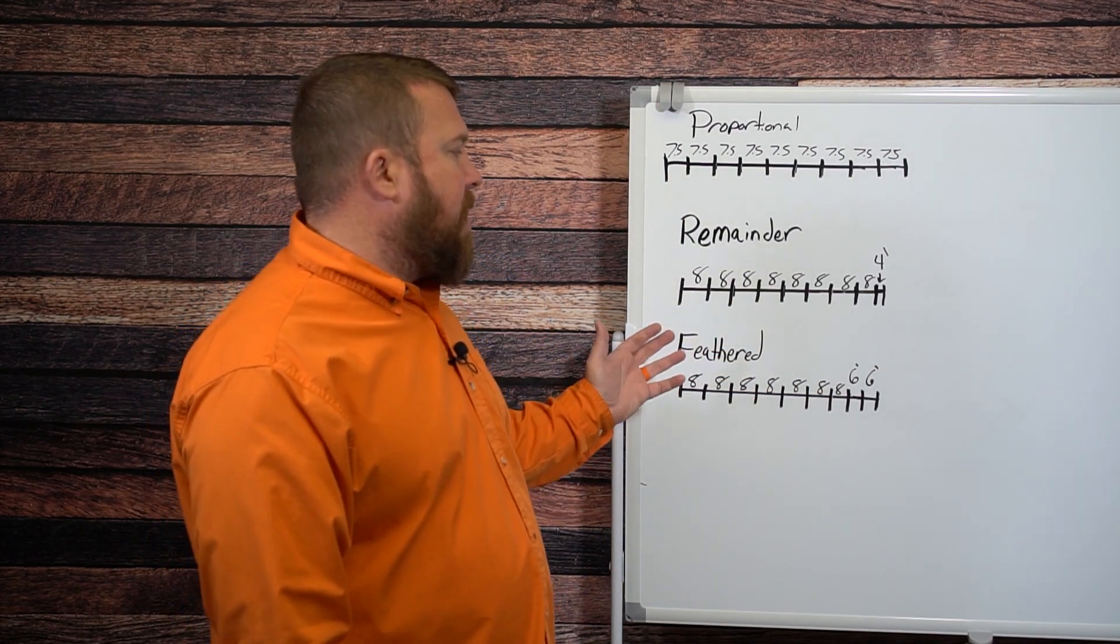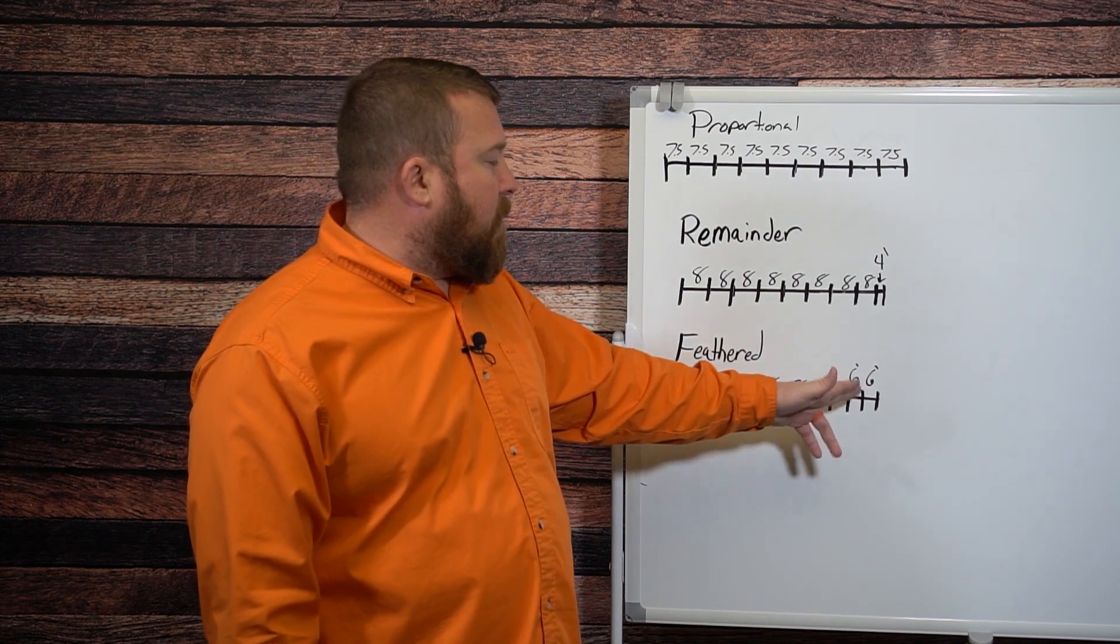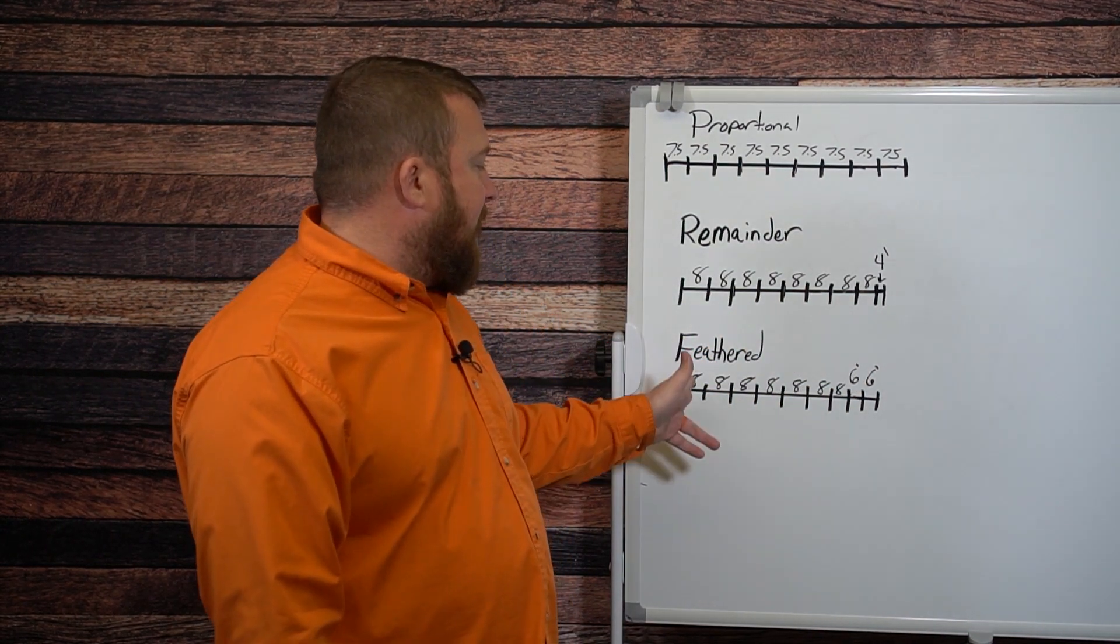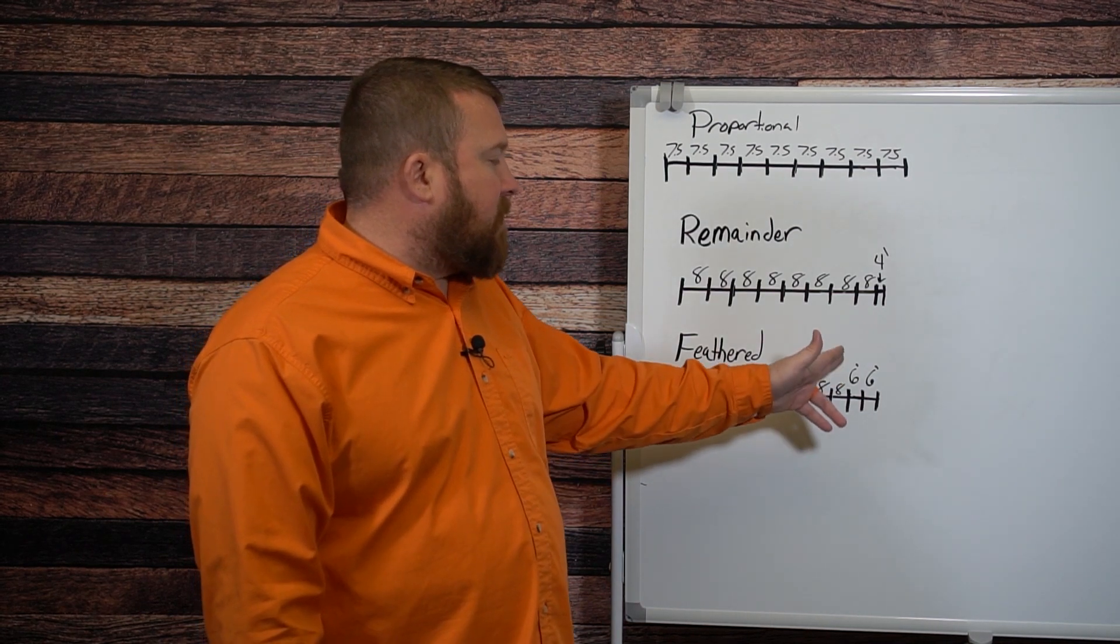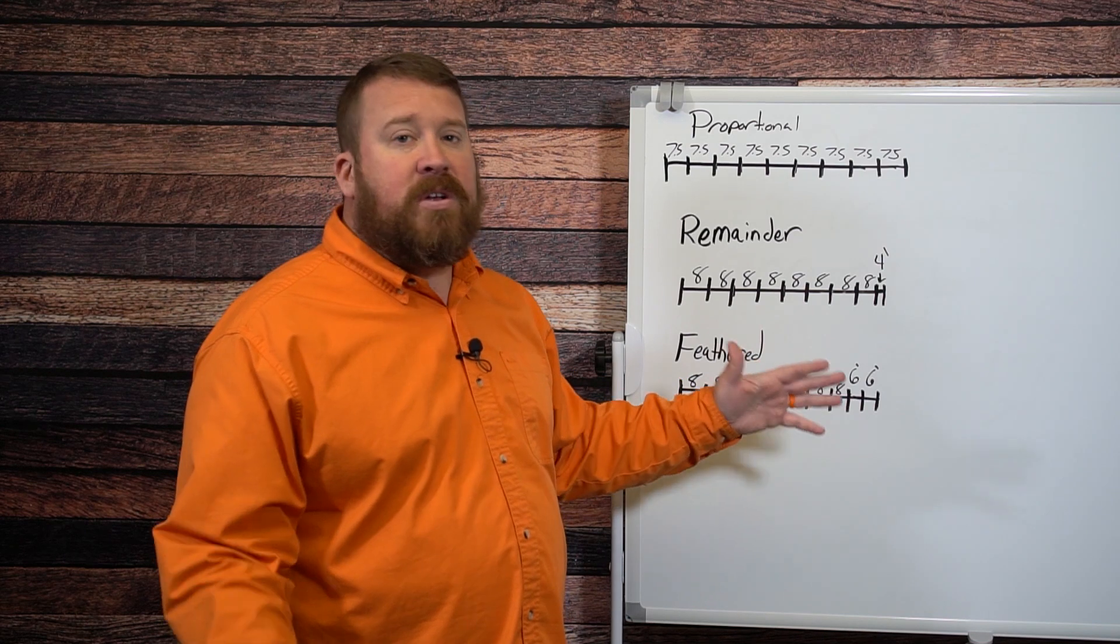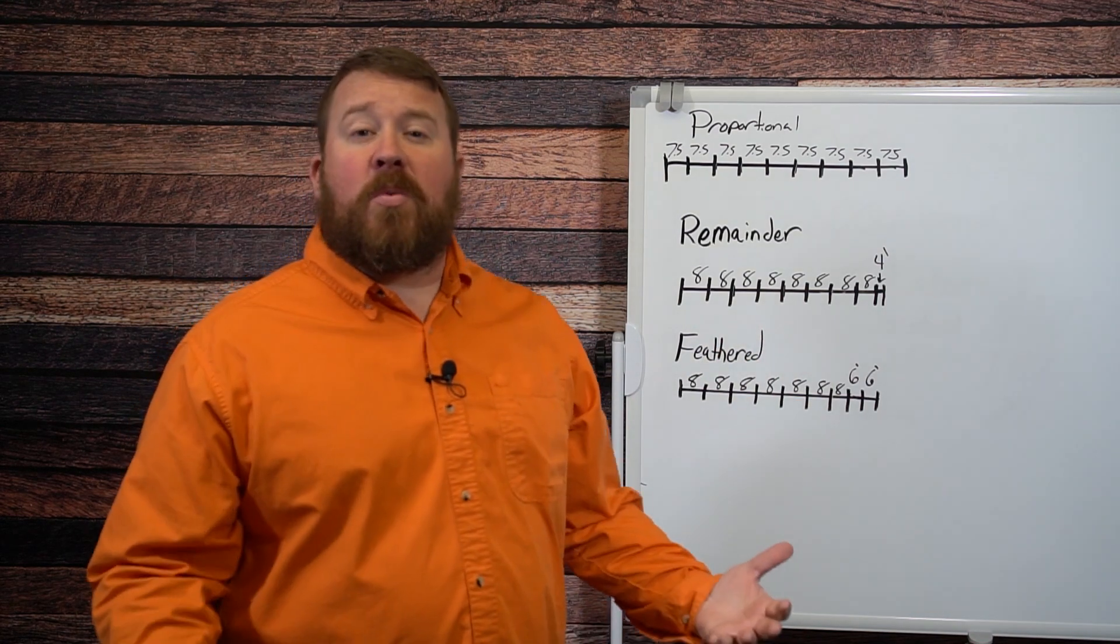The feathered method is similar to the remainder, with the exception that the smaller sections are split over the last two. So you evenly space at eight feet the majority of your panels. The remainder is 12, so you split that into two smaller six foot sections.